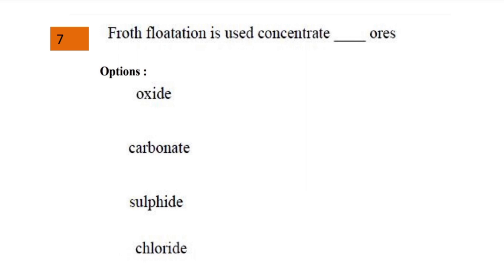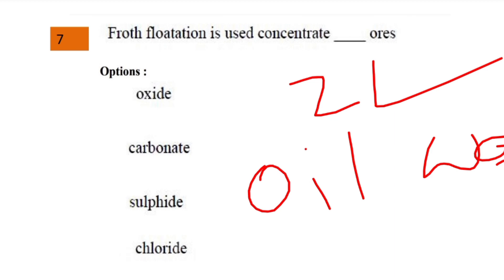Next question: froth flotation is used to concentrate which type of ores? The options were oxide, carbonate, sulphide, and chloride. Froth flotation uses oil and water. Only sulphide ore is not soluble in water — sulphide is wetted by oil while dirt particles mix in water, allowing easy separation. Therefore, froth flotation is used to concentrate sulphide ores.